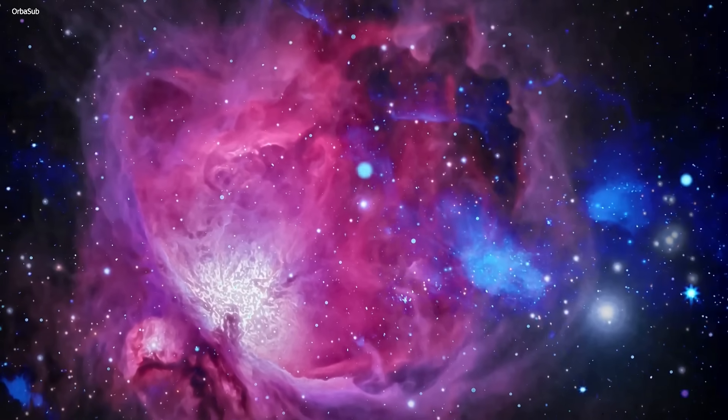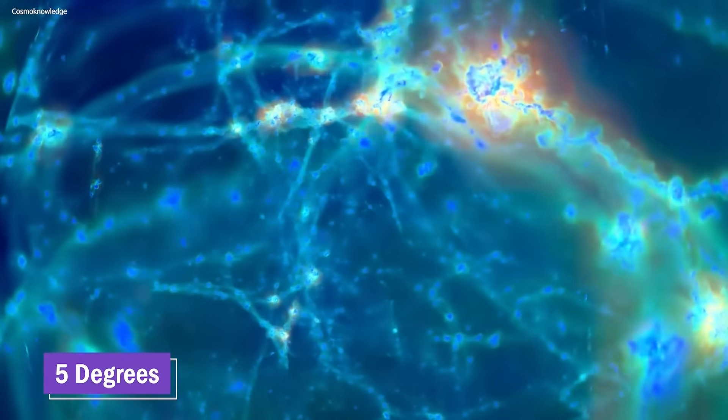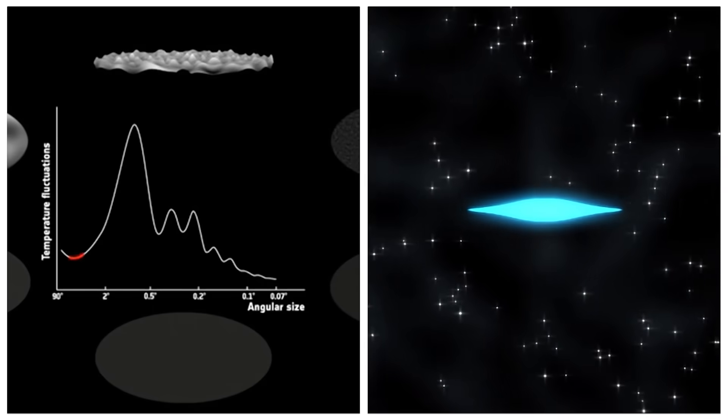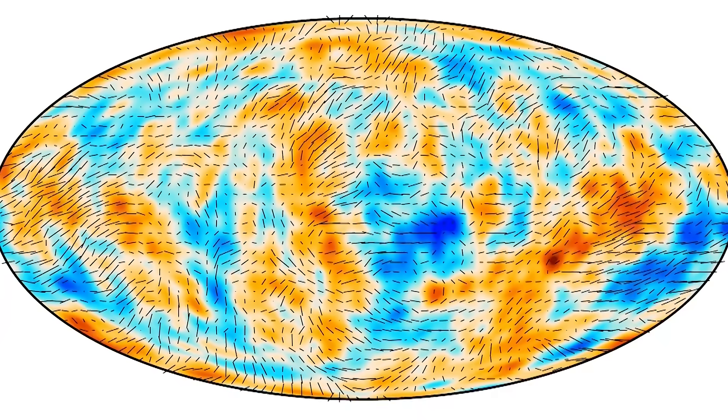Overall, the radius of the cold spot is about five degrees, which is much larger than the largest fluctuations in the primordial CMB temperature, which occur on an angular scale of about one degree. This makes the cold spot even more unusual.